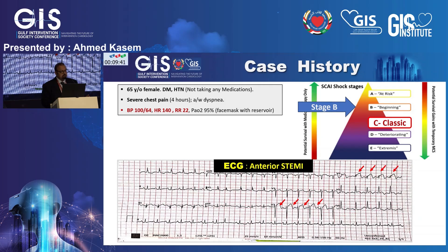She presented with severe typical chest pain of short duration associated with dyspnea, with early signs of cardiogenic shock: blood pressure low despite vasopressors, heart rate 140, and respiratory rate tachypneic at 22. ECG showed anterior ST-segment elevation, consistent with acute anterior infarction.